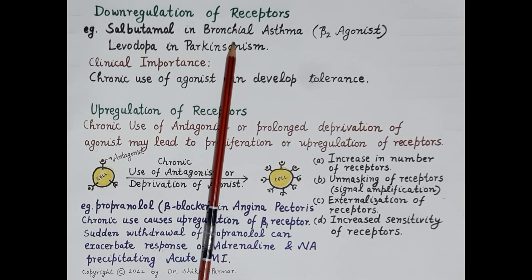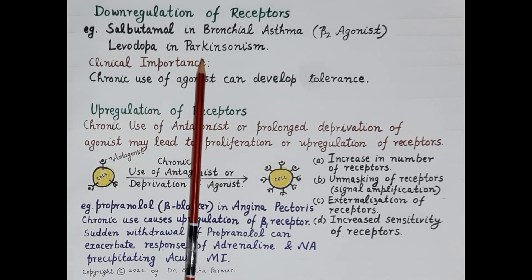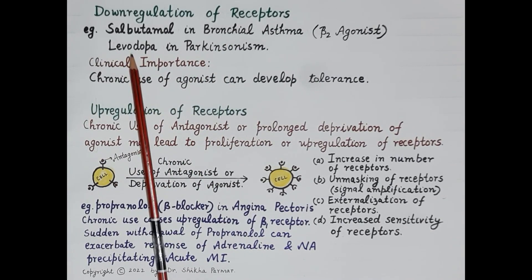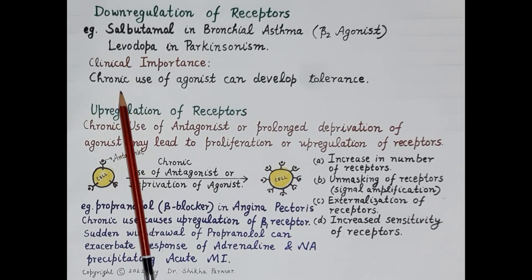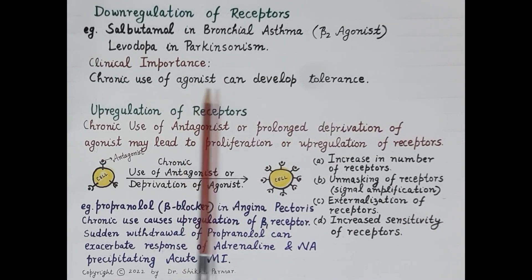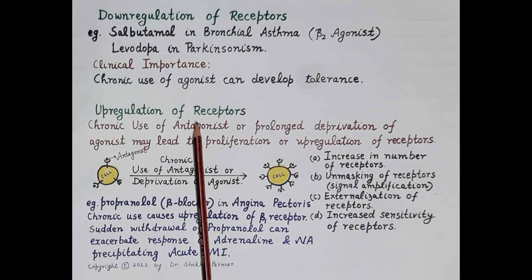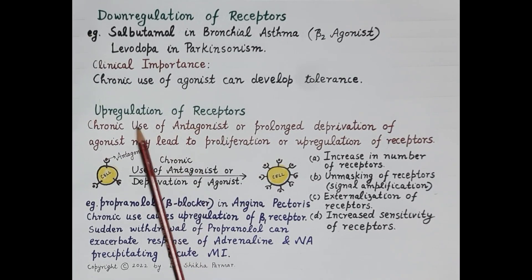Continued use of salbutamol in bronchial asthma makes salbutamol ineffective, so to produce desired bronchodilation either the dose must be increased or the drug must be changed. Another example is levodopa in parkinsonism — continued use makes levodopa ineffective, and increasing the dose increases side effects. So chronic long-term use of an agonist decreases therapeutic effect and can result in the development of tolerance.